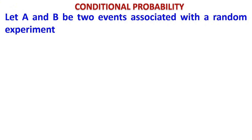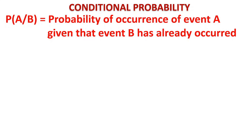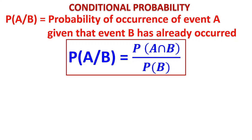Let us check what conditional probability is. Let A and B be two events associated with a random experiment. The probability of occurrence of event A, under the condition that B has already occurred — where A and B are connected events and P(B) is not equal to zero — is called the conditional probability. It is denoted by A slash B, meaning B has already occurred and we find the probability of A. The formula is P(A∩B) divided by P(B).